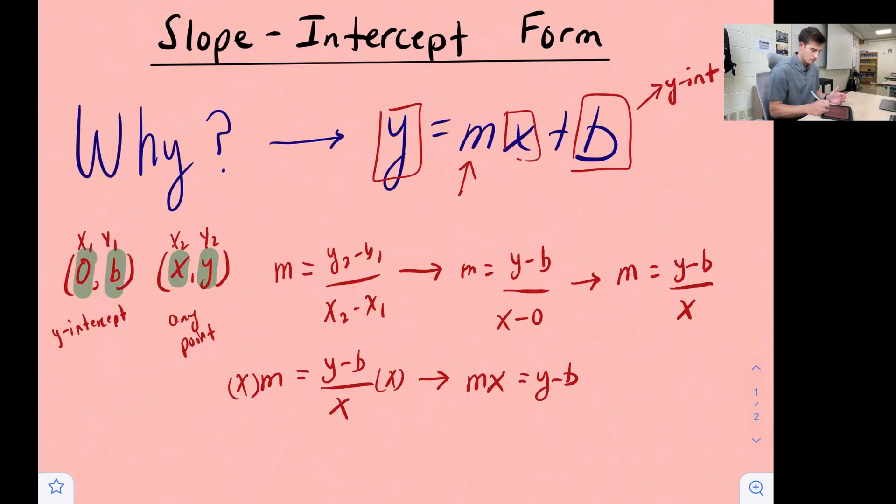Now at this point we want to move b to the other side, and so that's going to give us mx plus b equals y. Now we're practically done. We can now just reflect that over and say y is equal to mx plus b.